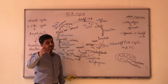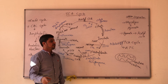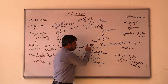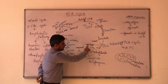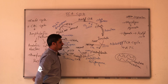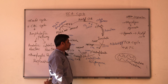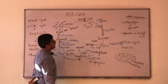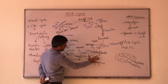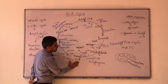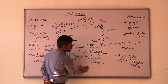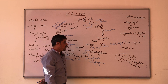Whenever there is involvement of dehydrogenase, there will be the formation of an electron carrier. Here we have NADH + H+, and also the removal of a CO2 molecule. Next, alpha-ketoglutarate is converted into succinyl-CoA, and the enzyme involved is alpha-ketoglutarate dehydrogenase. Again, there will be removal of CO2.